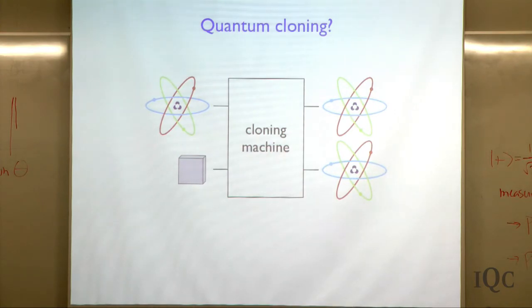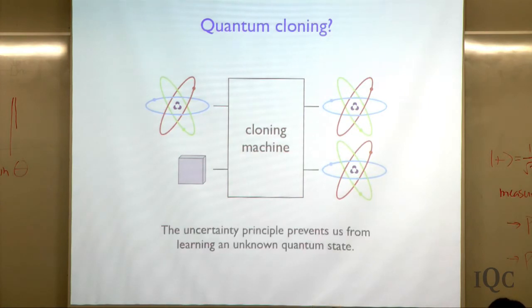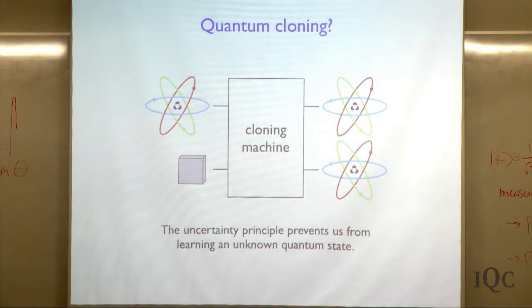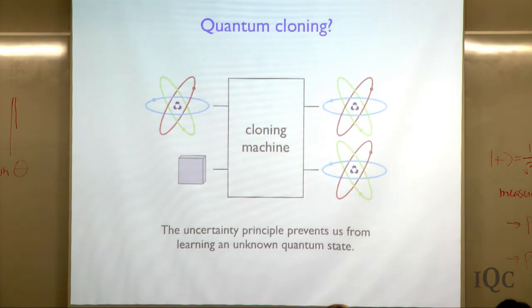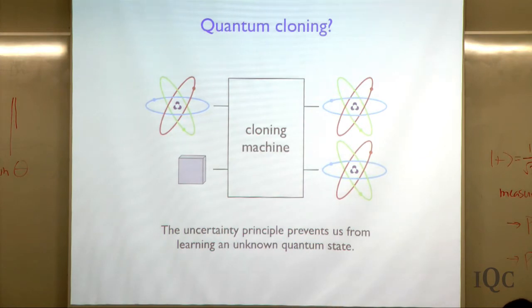It turns out that doing this is actually impossible. If we just think about some particle that has some position and momentum, we can't go through this process of figuring out exactly what its position and momentum are and then making another particle with exactly the same position and momentum — because of the uncertainty principle, which prevents you from simultaneously measuring both the position and the momentum of a particle with arbitrary precision. So you actually can't learn the state of a quantum system arbitrarily well, and that prevents at least that way of trying to build a cloning machine.